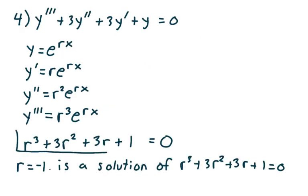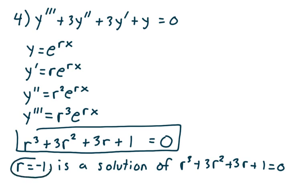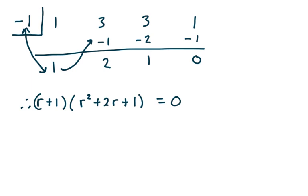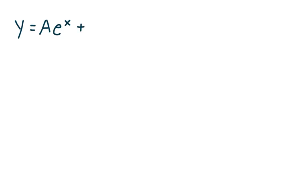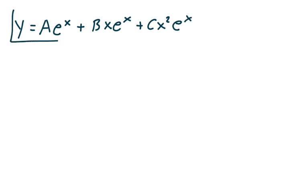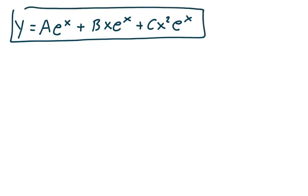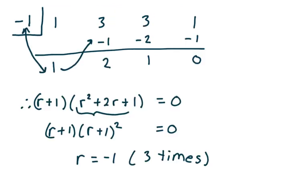Knowing r equals negative 1 is a solution, I can factor the left-hand side. Notice that r squared plus 2r plus 1 is a perfect square, so I can write this as r plus 1 times r plus 1 squared equals 0 — meaning r plus 1 cubed equals 0. So r equals negative 1 three times. When you have a repeated root, my general solution will be y equals a e to the negative x plus bx e to the negative x plus cx squared e to the negative x.